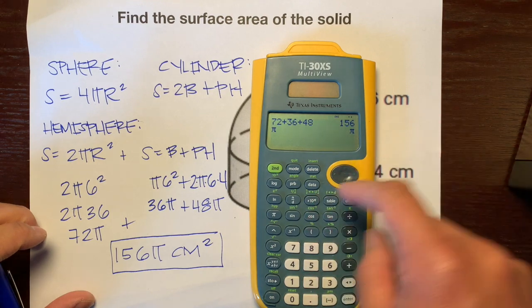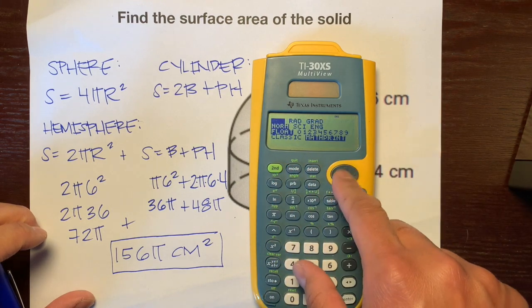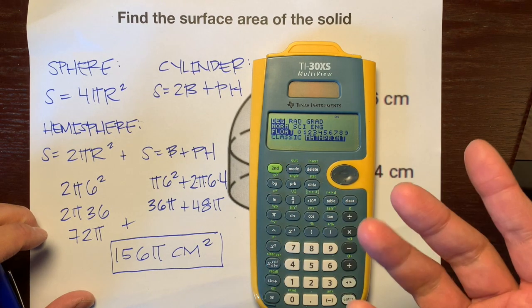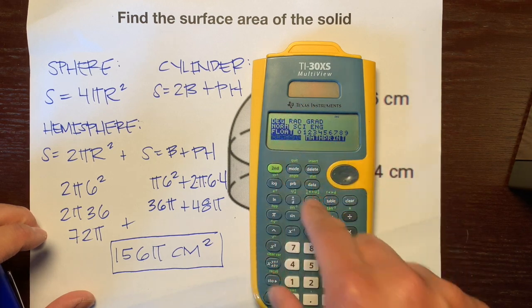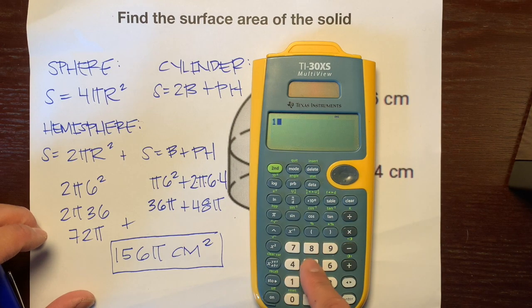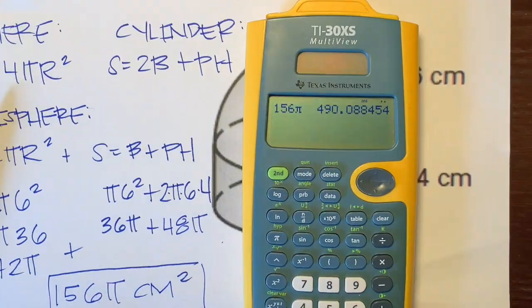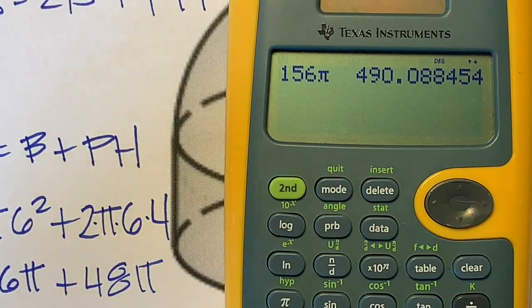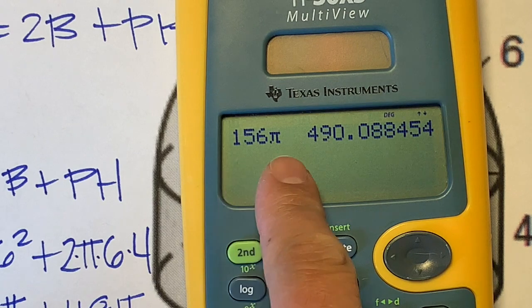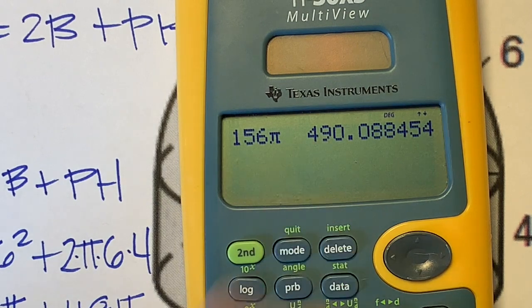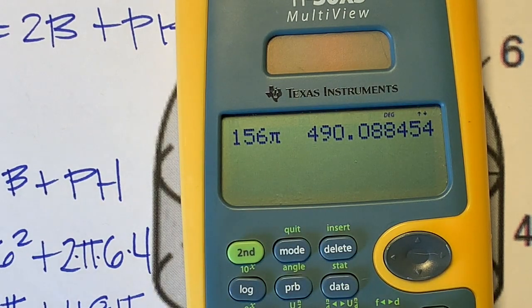Or if your teacher wants it in decimal, go to mode. Press the mode button. Go to classic. Take it off math print. And just type in 156π. And that would be 490.08. So, those will be your two answers. Either 156π centimeters squared or 490 point something something centimeters squared.